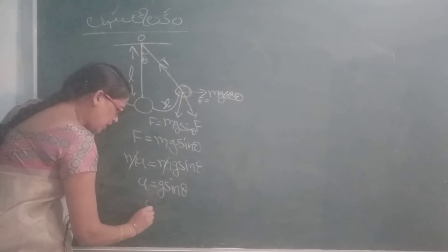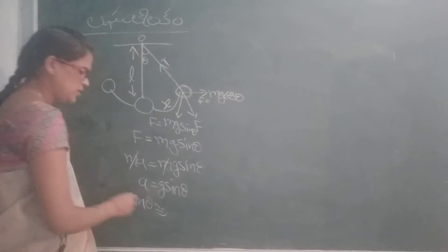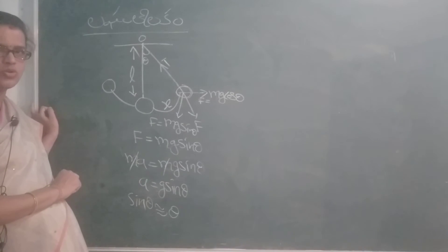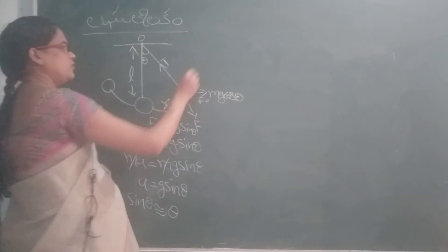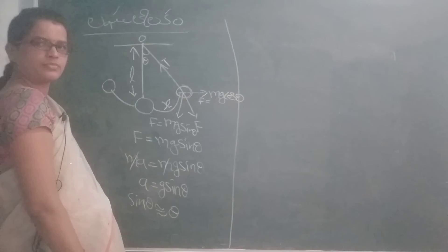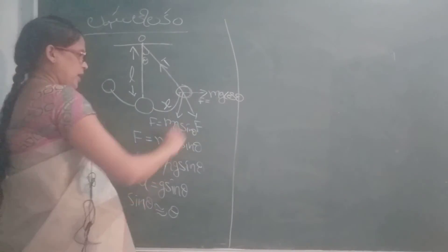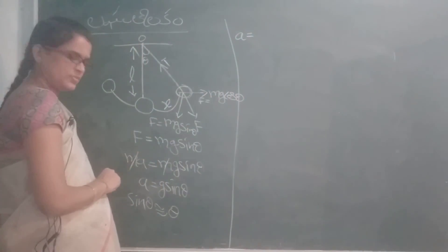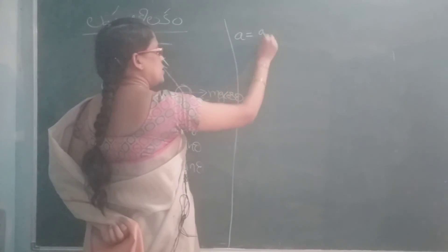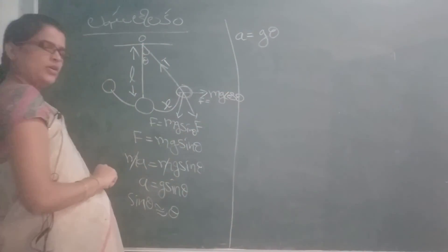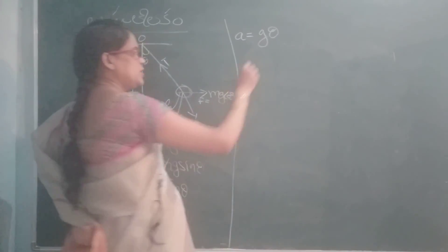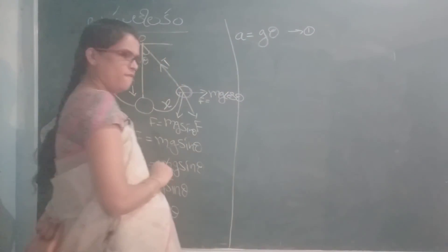Theta nedi chala swalpam aithe apudu Signed Theta is equal Theta. Theta nedi chala swalpam aithe Signed Theta approximately equal Theta. A is equal G. Signed Theta. Theta A is equal G. Theta Equation number 1.